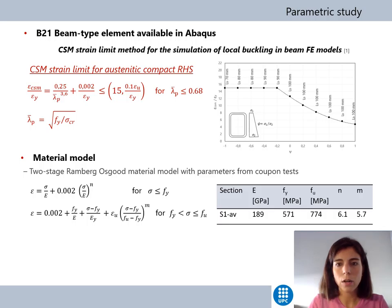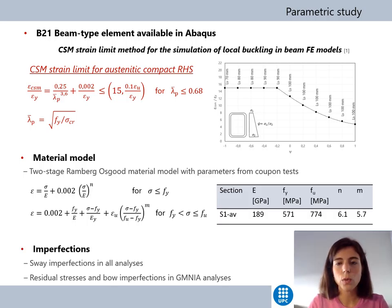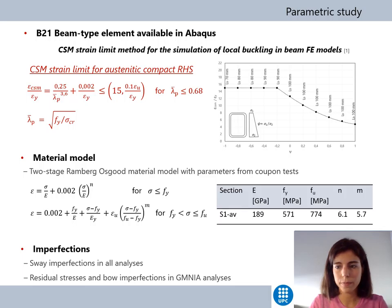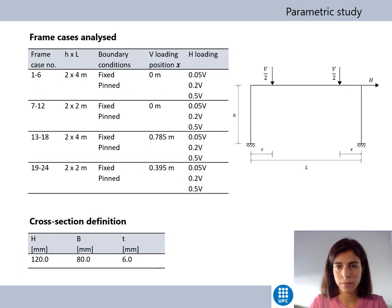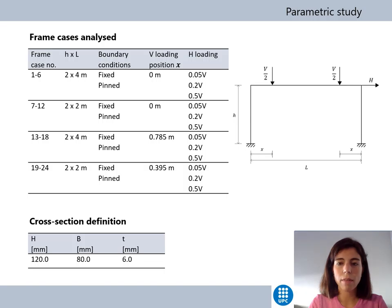Regarding the material model, the two-stage Ramberg-Osgood model was used. The values of the parameters correspond to the weighted average values obtained from tensile, flat, and corner coupons, also tested at the UPC. Sway imperfections were included in all analyses. Residual stresses and bow imperfections were also included in the GMNIA analysis.